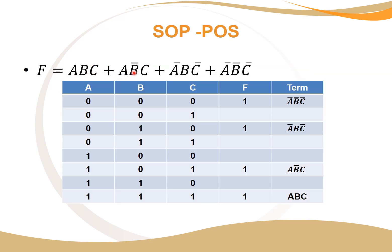Now we set up the truth table, focusing on the unique combinations making the terms one. This is our expression F and these are our unique combinations. If all variables A, B, and C are one, our expression is one. Here we have A and B-not and C-not, so if A is one, B is zero, and C is one, then the expression is one.